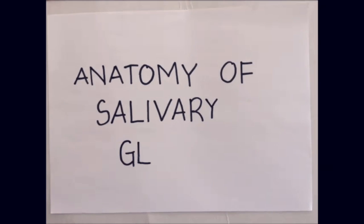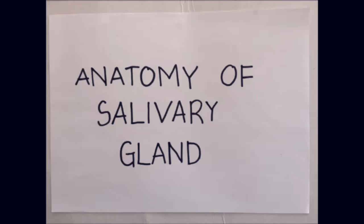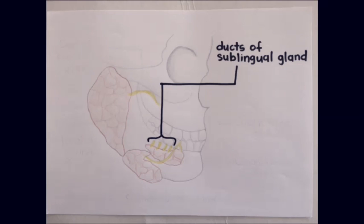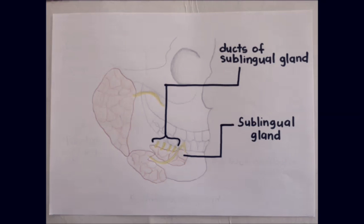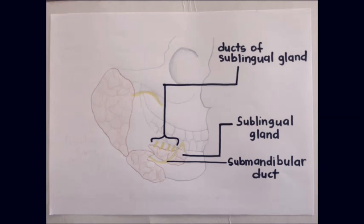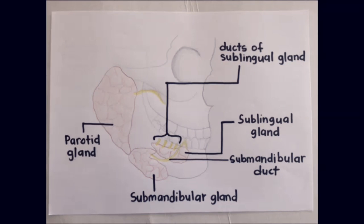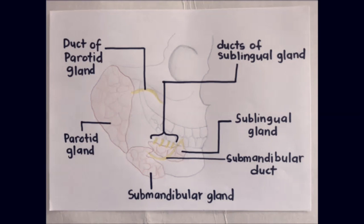The anatomy of the salivary gland. Key structures include: the duct of the sublingual gland, the sublingual gland, the submandibular duct, the submandibular gland, the parotid gland, and the duct of the parotid gland.